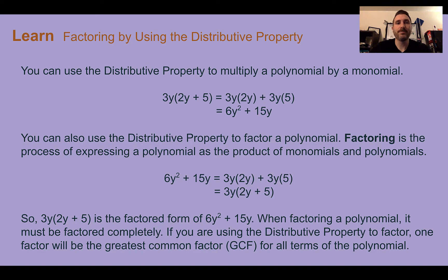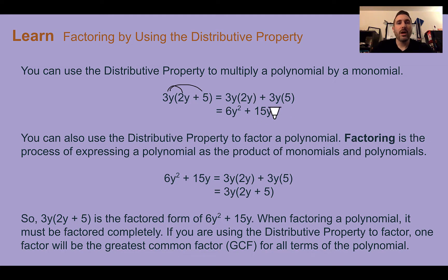Factoring by using the distributive property. In Lesson 2, we learned about using the distributive property to multiply a polynomial by a monomial. As we can see here, we had 3y times this quantity — we just multiplied that 3y by everything and we end up with our final polynomial. We can also use the fact that the distributive property multiplies it out to factor — we're just going to be undoing our multiplication.